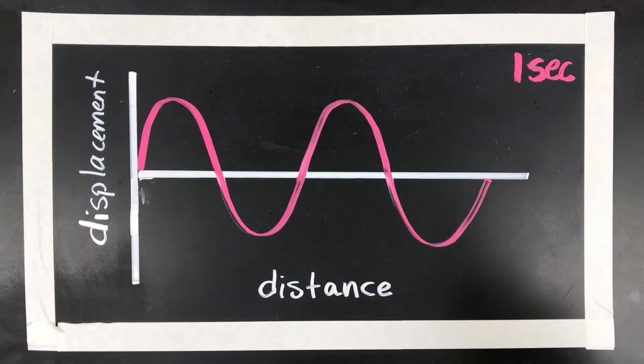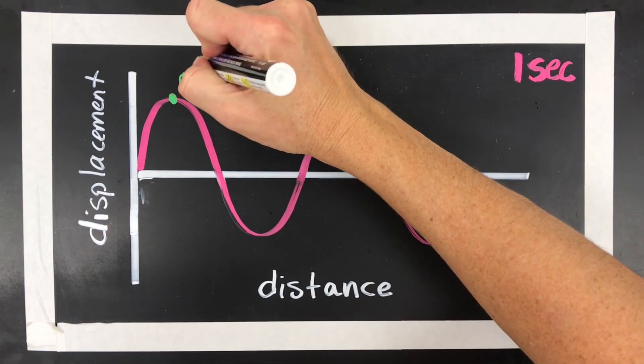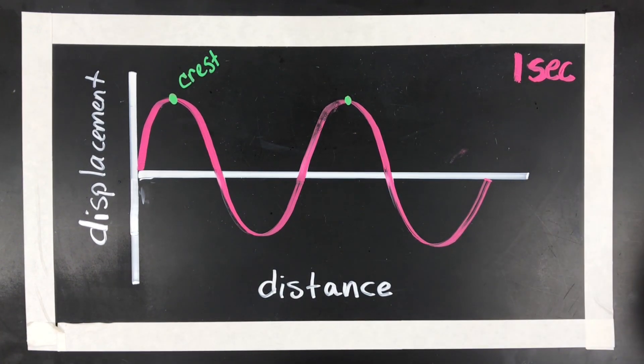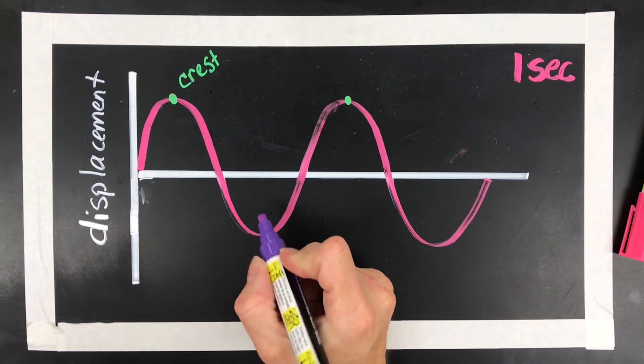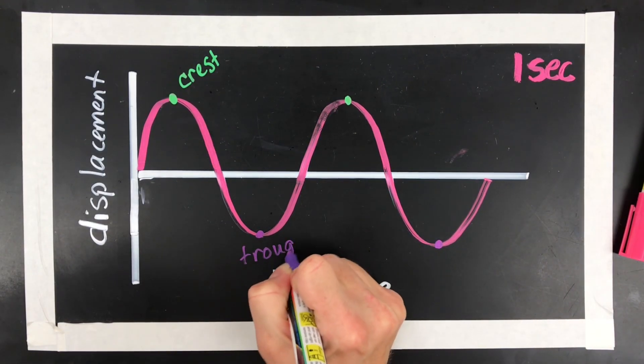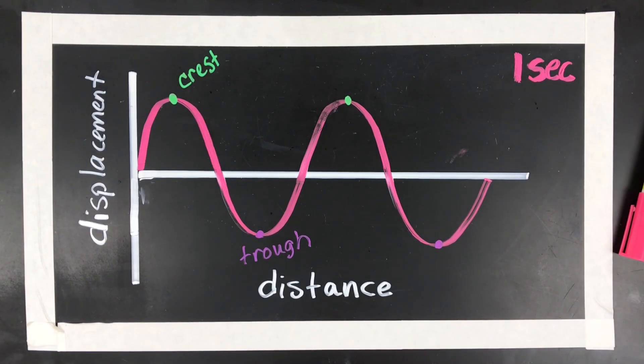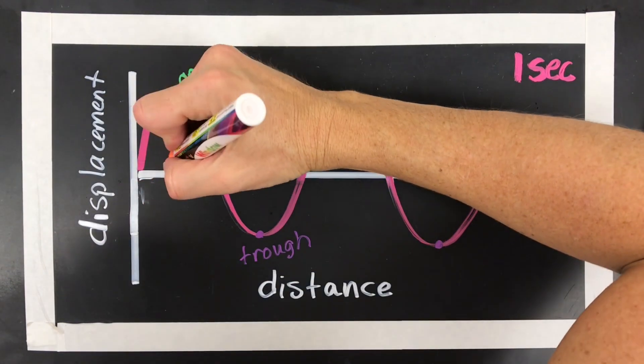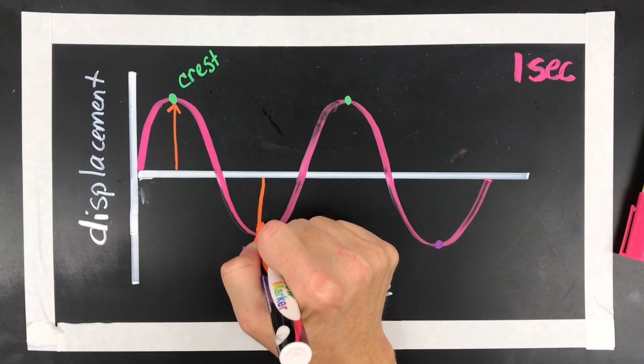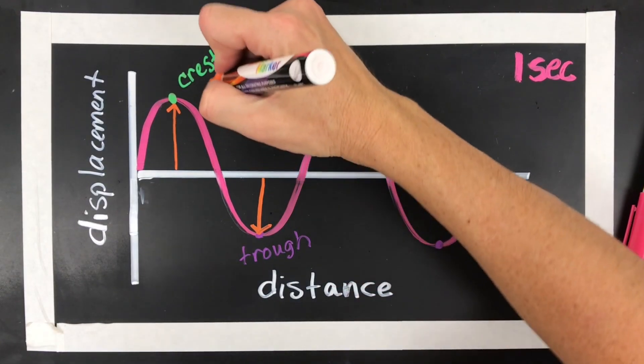So let's label all the components. The top is the crest. You actually have, we have two crests here, there and there. Down at the bottom is called the trough. So here and here are called trough. Amplitude is actually from here to here. And really amplitude, it can go downwards too. So that's amplitude.